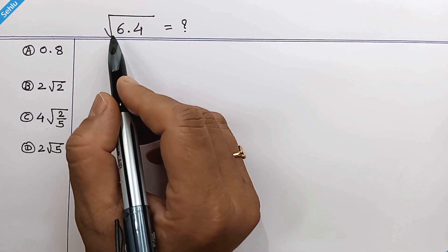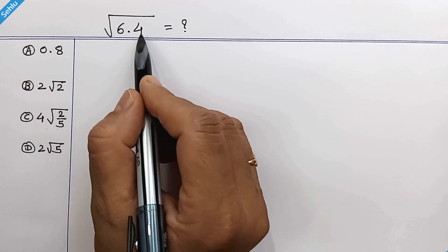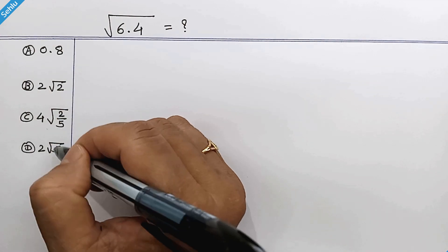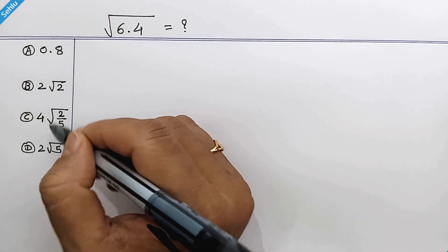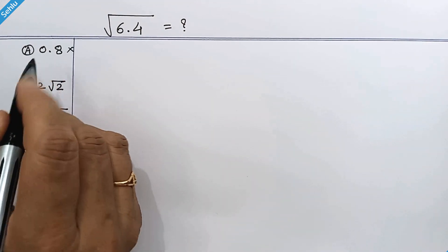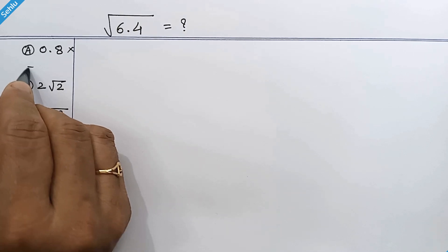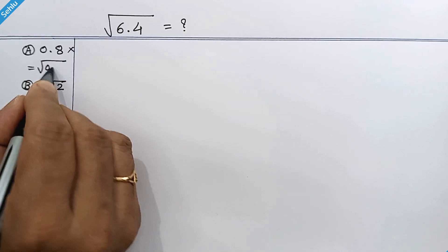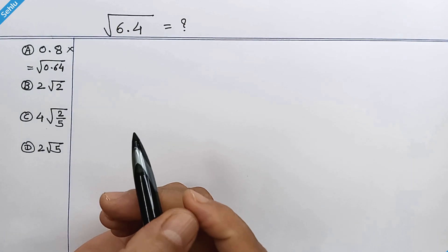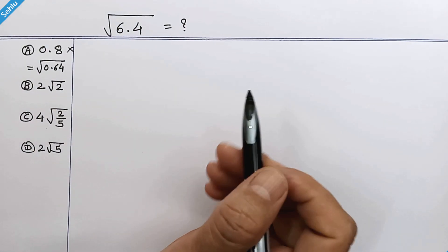Hello friends, we need to find the square root of 6.4 and determine the alternate form from these options. Option A cannot be correct because it's the result of square root of 0.64. Now, what do we do first?